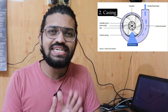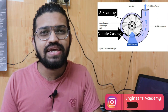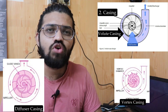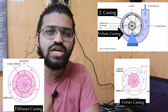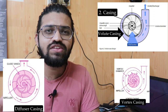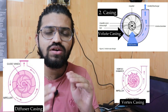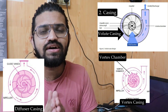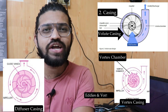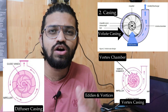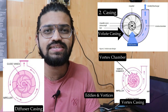The casing acts as a protective cover and has three types: volute casing, vortex casing, and diffuser type casing. The volute casing has a gradually increasing area so that at the exit the velocity is lower and the pressure is higher. The vortex casing has a circular plate inside and reduces the formation of eddies and vortices, which improves efficiency.